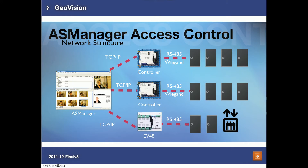Here is the network structure for AS Manager. On the left you have AS Manager installed on a PC. You connect it through TCP/IP to AS controllers — regular door controllers or elevator controllers like the EV48. You can also connect readers from Jurovision or third-party readers using RS485 or Wiegand to the controllers, and users can swipe cards at the readers to open doors. In AS Manager you'll see the status of card swipes and door status.